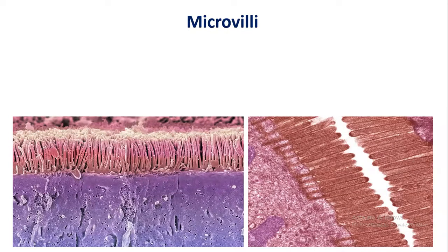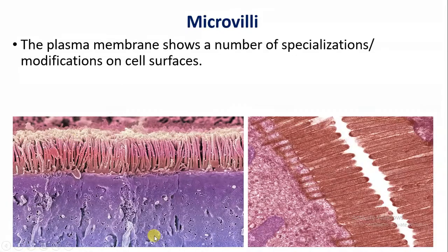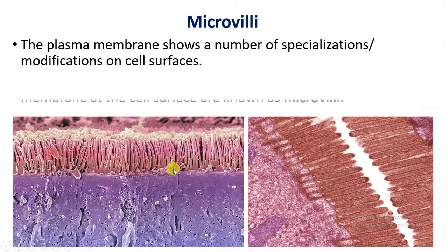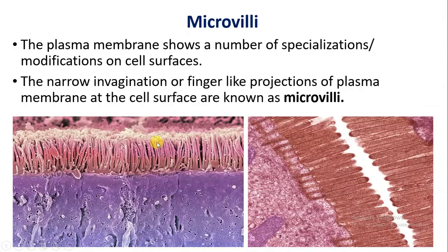Hello students, welcome. I'm Jyothi Rajput and today we will talk about microvilli. Whenever we see a cell, they do have a plasma membrane, and on the plasma membrane there are some specialized or modified surfaces present. Those modified surfaces may be a kind of finger-like projections. Those are called microvilli.